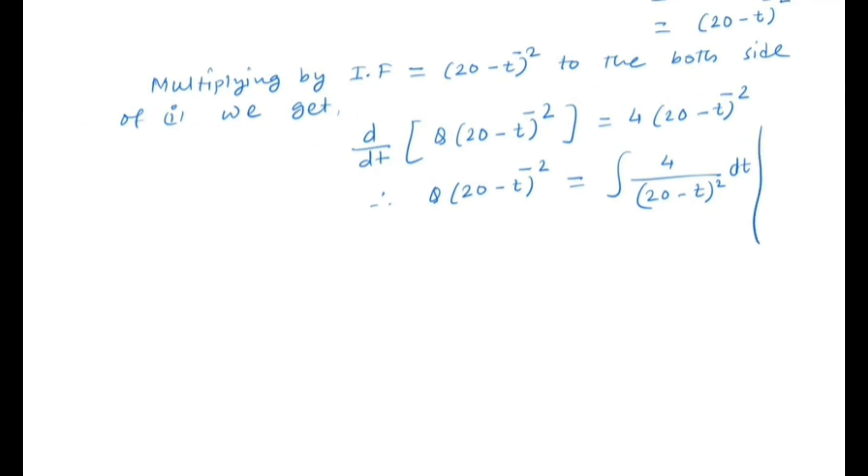Now put 20-t as u. So we get -dt = du, that implies dt = -du.